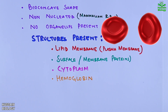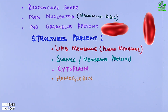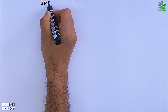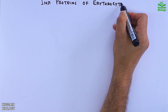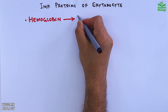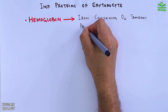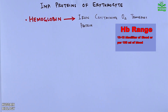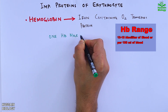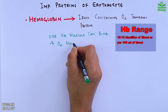Since the RBC is without organelles, it survives up to 120 days on average. Now getting to the important proteins of erythrocytes: first is hemoglobin, the iron-containing oxygen transport protein. Hemoglobin ranges from 10 to 18 grams per deciliter of blood, or per 100 ml of blood. One molecule of hemoglobin can bind four molecules of oxygen.